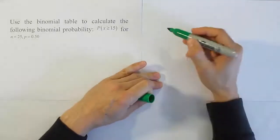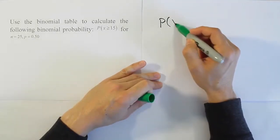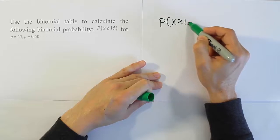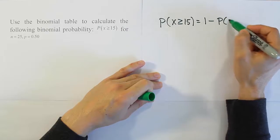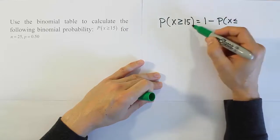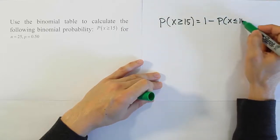Remember, if we have a probability for the binomial table where x is greater than or equal to 15, the table won't do that directly. The trick is to do 1 minus the probability that x is less than or equal to one number less than that, which is going to be 14.